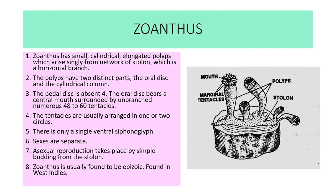Next example is Zoanthus. Zoanthus has a small cylindrical elongated polyp which arises singly from a network of stolons, which are horizontal branches. The polyp has two distinct parts: the oral disc and the cylindrical column. The basal disc is absent. The oral disc bears a central mouth surrounded by numerous unbranched tentacles — 48 to 60 — usually arranged in one or two circles. There is only a single ventral siphonoglyph. Sexes are separate. Asexual reproduction takes place by budding. Zoanthus is usually found epizoic in West Indies.